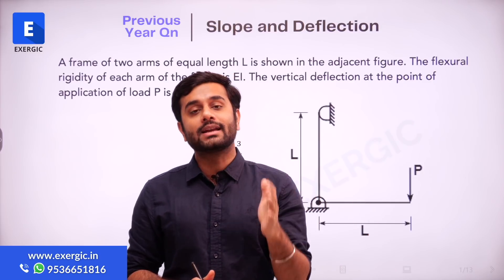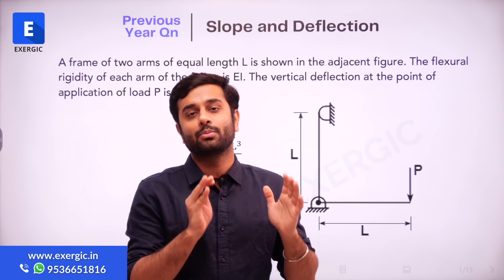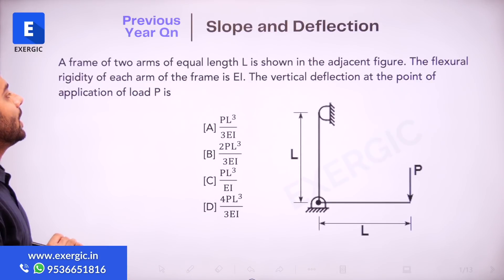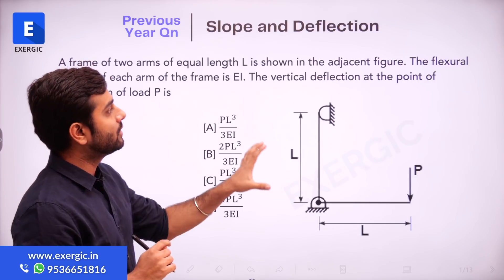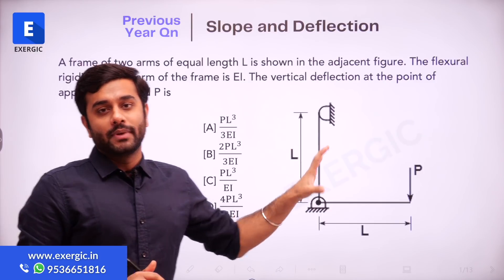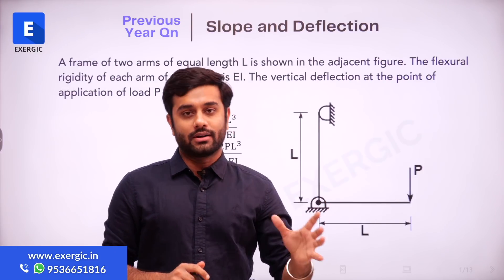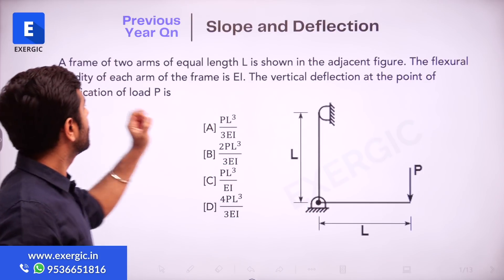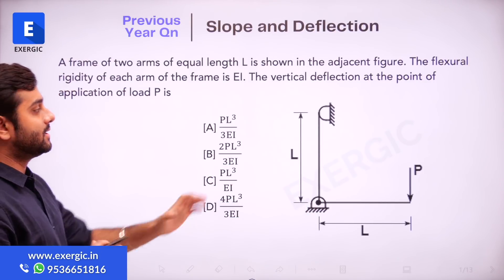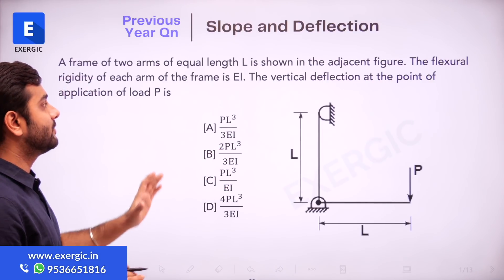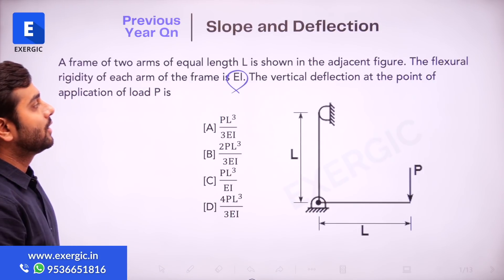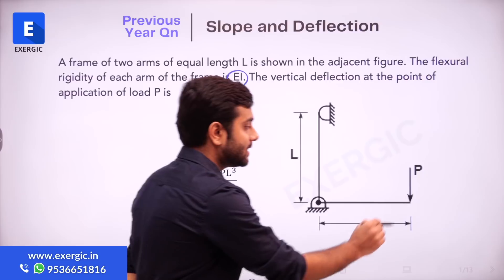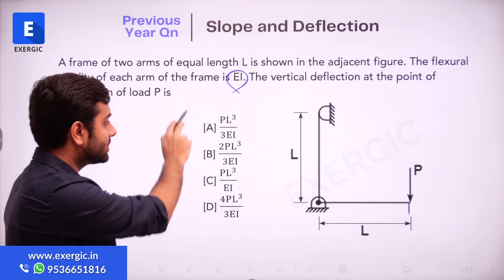Such questions are very frequent in GATE and have been asked more than three times recently, including GATE 2021. So it is important that you pay attention to this example. Have a look at the question: a frame of two arms of equal length L is shown in the adjacent figure. The flexural rigidity of each arm is the same, EI. Also note that in many different sources students refer to, the answer to this question has been told incorrectly. The question asks for the vertical deflection at the point of application of load P.